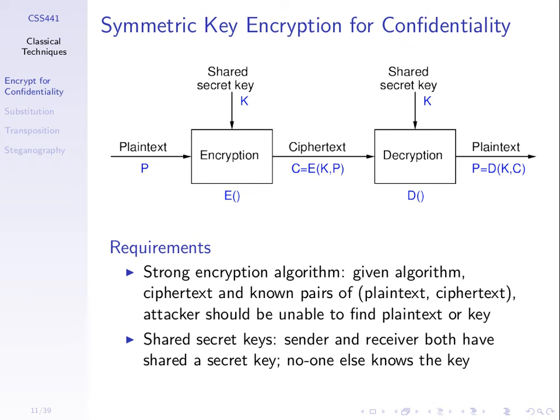We're going to focus on symmetric key encryption. In our general model, we encrypt plaintext with a key to get ciphertext, send the ciphertext to user B, and they decrypt using a key to get the original plaintext. With symmetric key encryption, both A and B use the same key — we call it a shared secret key. It's shared amongst the two users and must be secret; only those two users must know that key. If someone else discovers the key, they can also decrypt.